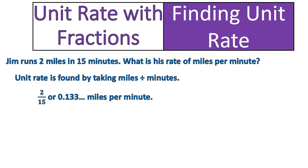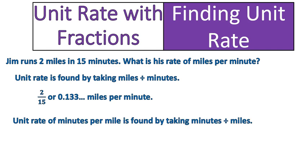In this case, we would say 2 divided by 15, which gives us 2 fifteenths, or 0.133 repeated. That's how many miles Jim runs per minute. We could also find the unit rate of minutes per mile — you do say, how fast can you run the mile? So you would find minutes divided by miles: 15 divided by 2, or 7.5 minutes per mile. That's how you find the unit rate.